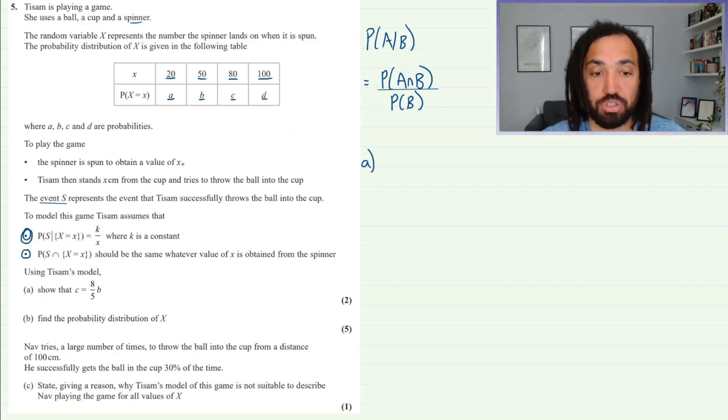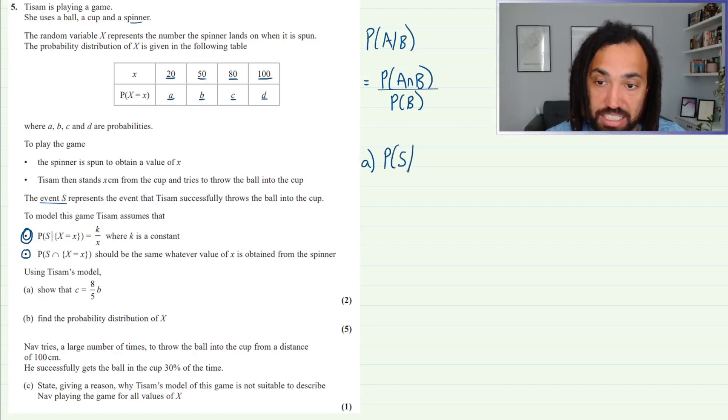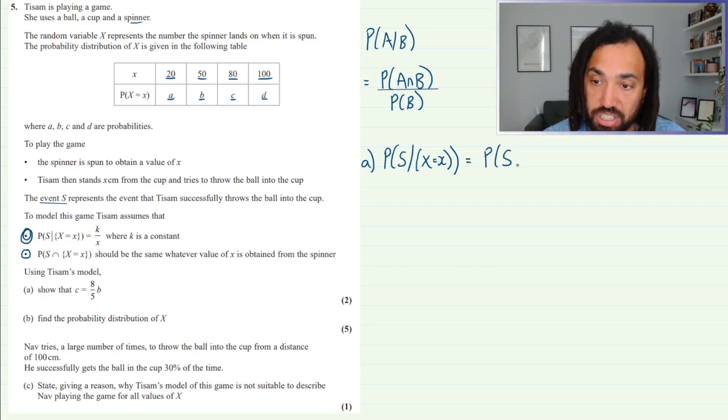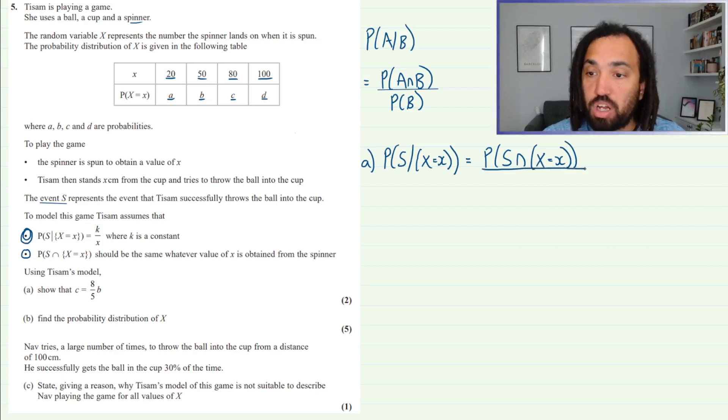So let's apply that now to this horrible bit of notation. The probability that S given that the spinner picks out a value of X, so that means the probability that you successfully get the ball in the cup given the particular distance that you are stood from it which was determined by the spinner, is equal to the probability of S intersection X equals X. So again, this is just following the conditional probability formula, all over what is given, and what is given is X equals X.